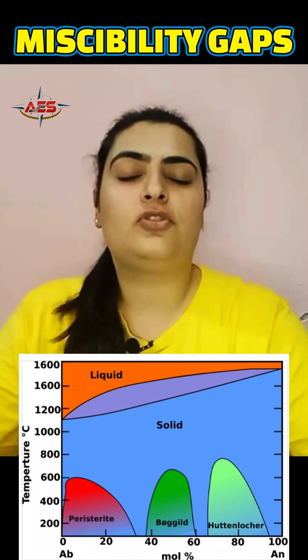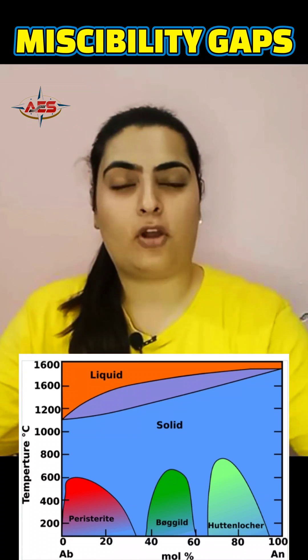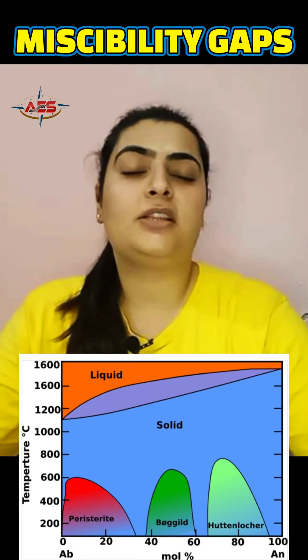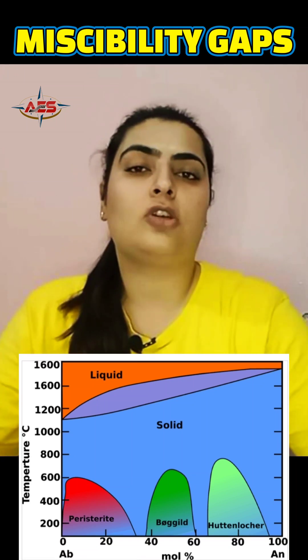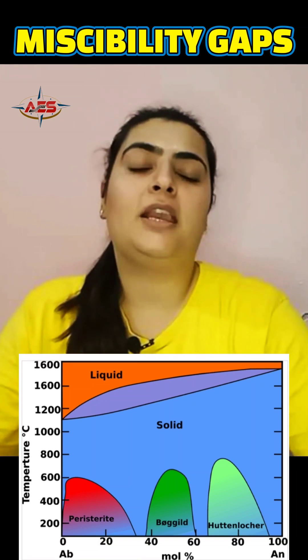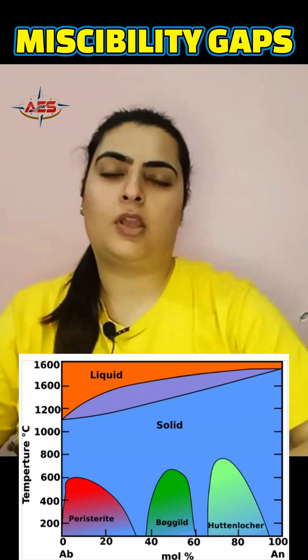The Bøggild intergrowth, which ranges from albite 47 to albite 58, represents the labradorescence or Schiller effect that we see in labradorite minerals.